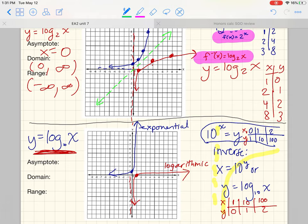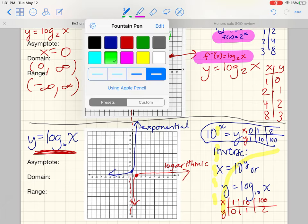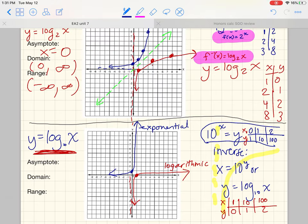Earlier we had looked at y equals 10 to the x, and we did graph its inverse by switching the x and the y. So if f is 10 to the x, you can now say the inverse f to the negative 1 of x is log base 10 of x. And log base 10, you will actually see people write that as just log of x because that is the log button on your calculator.